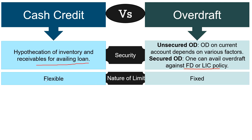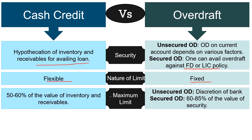Regarding the nature of limit: Cash Credit limit is flexible as the company keeps current assets as security, whereas the Overdraft limit remains fixed unless there is a change in the average balance. As for maximum limit: in Cash Credit it will be 50-60% of the value of inventory and receivables kept as security. In case of unsecured overdraft, the maximum limit is determined by the bank depending upon credit score, credit history, and past relationship with the bank. For secured overdraft, the maximum limit will be 60-85% of the value of security.